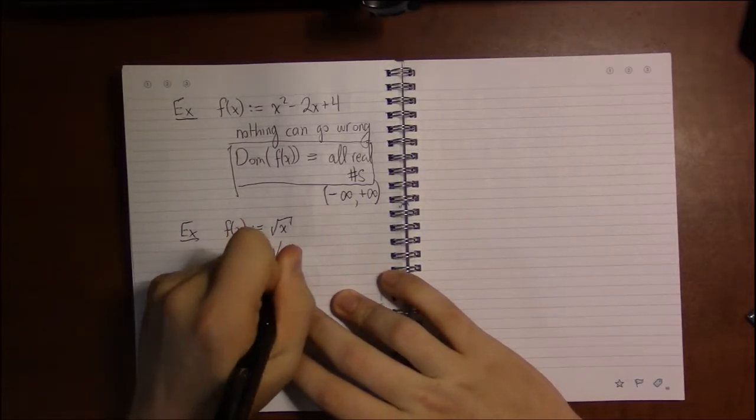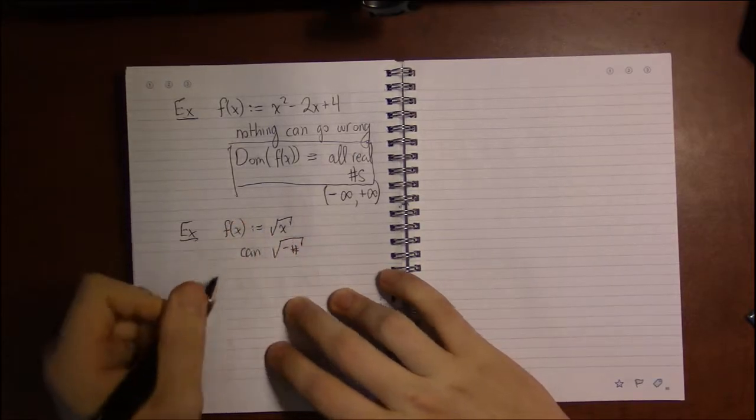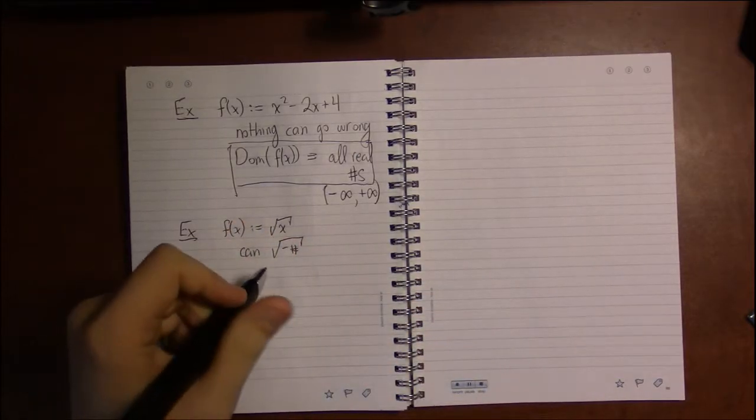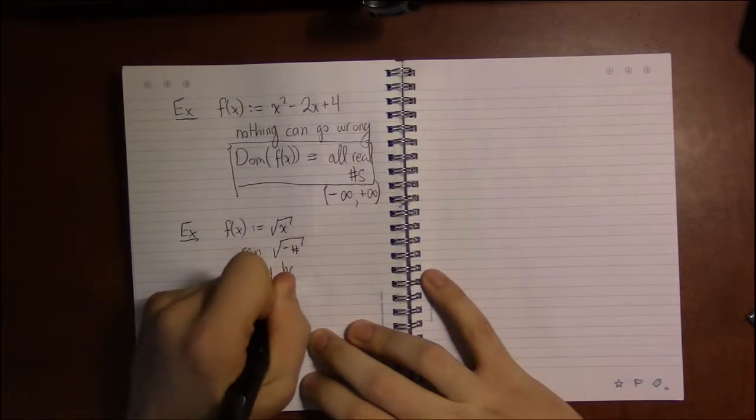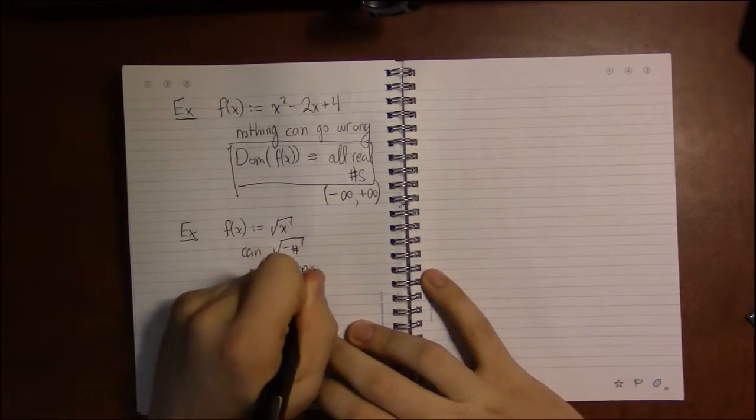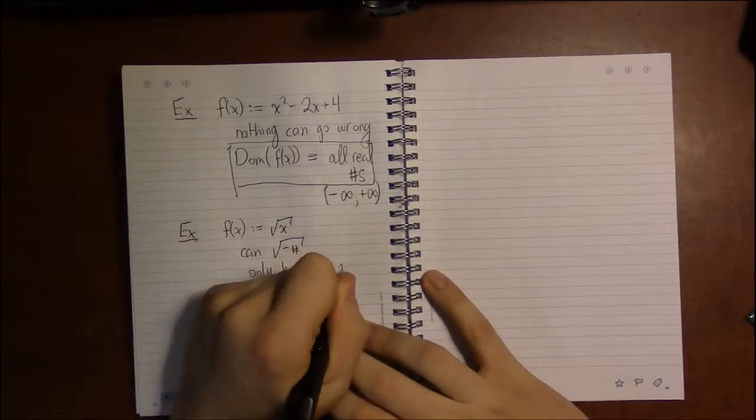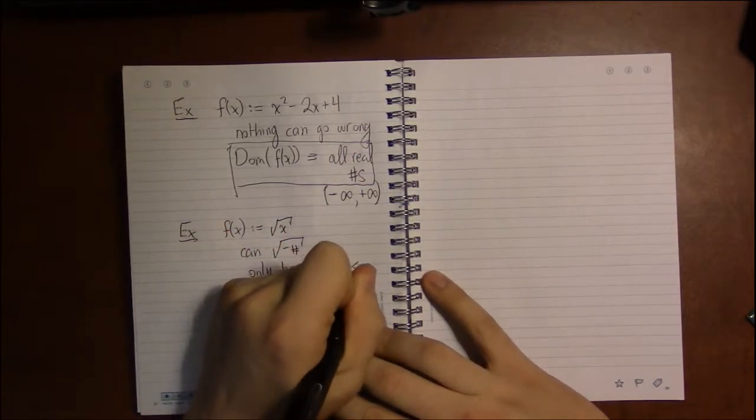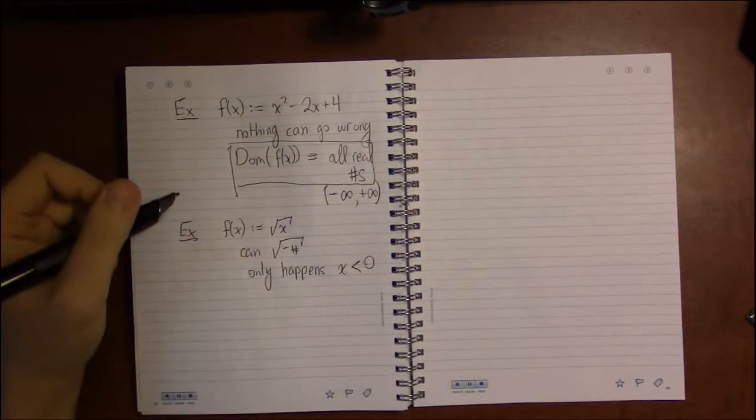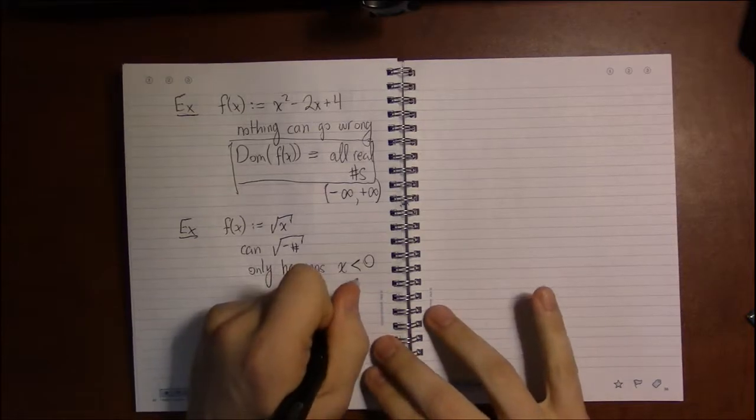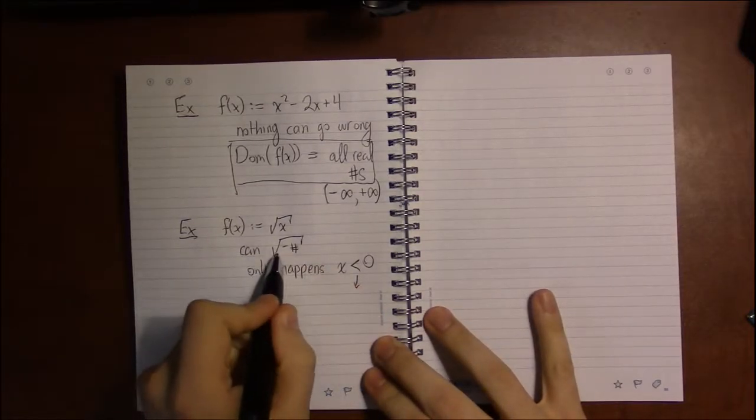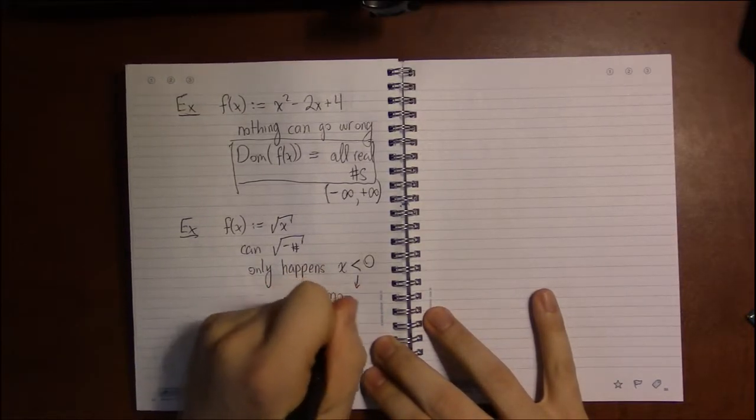So we can take square roots of negative numbers. That's only going to happen when what's inside the radical, the x, is negative, when it's less than zero. So if x is less than zero, I'm going to be taking the square root of a negative number, it's going to have no output.